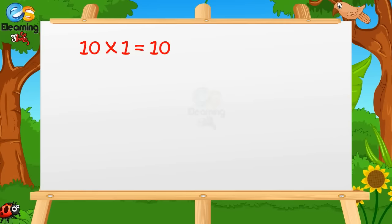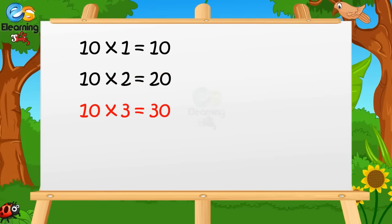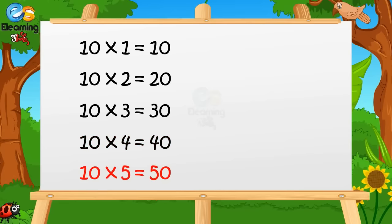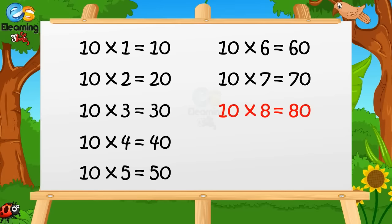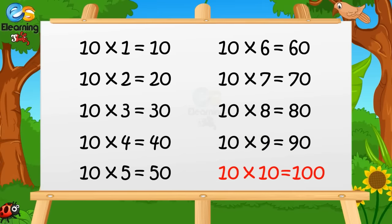Ten ones are ten. Ten twos are twenty. Ten threes are thirty. Ten fours are forty. Ten fives are fifty. Ten sixes are sixty. Ten sevens are seventy. Ten eights are eighty. Ten nines are ninety. Ten tens are hundred.